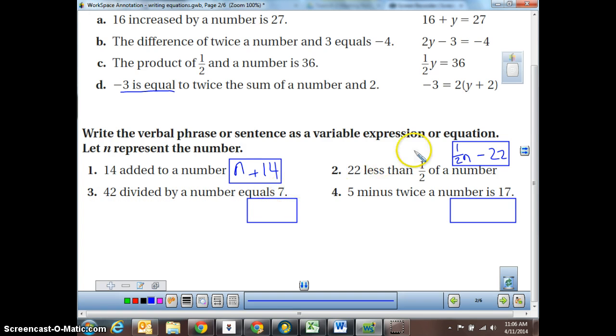Now we've got 42 divided by a number equals 7. I hope you notice that this is now an equation because we've got an equal sign in here. 42 divided by a number. So I would write it as a fraction like that. Equals 7. But you also could have put 42 divided by a number equals 7. Either one is fine. I just personally like that one.